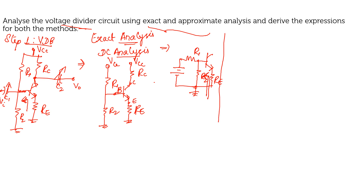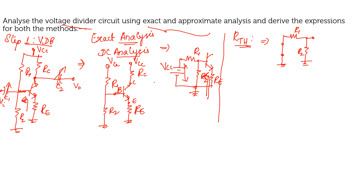Any complex circuit can be converted into a Thevenin's equivalent voltage along with a Thevenin's resistance. To find RTH, you have to short VCC. On the input side, shorting VCC leaves only two resistors — R1 and R2 in parallel. Therefore, RTH is equal to R1 parallel to R2.